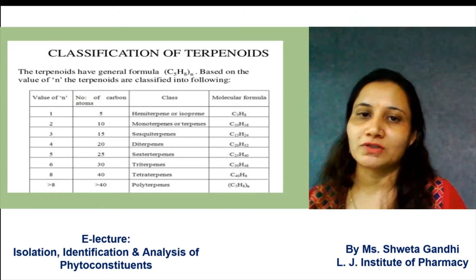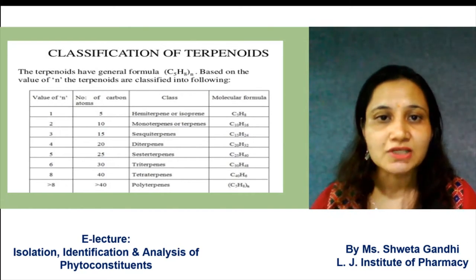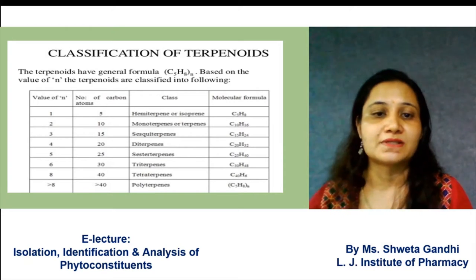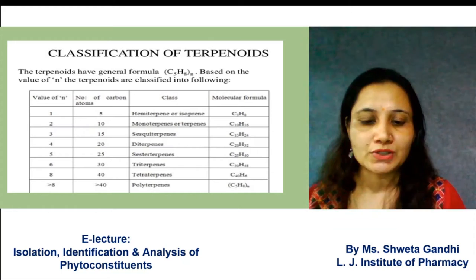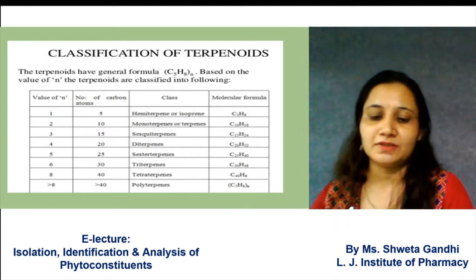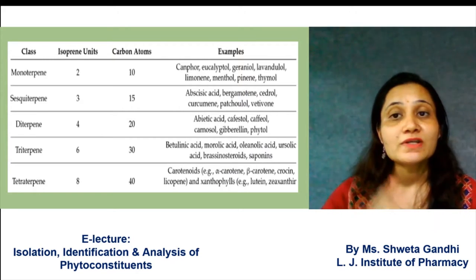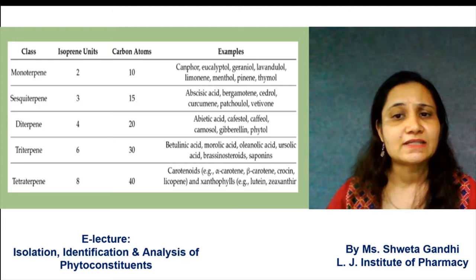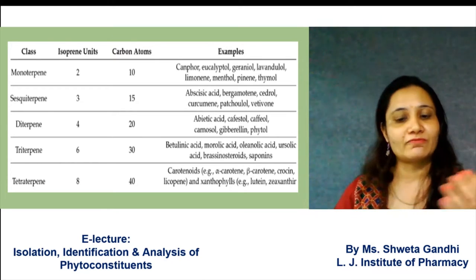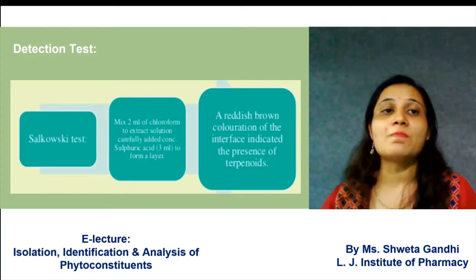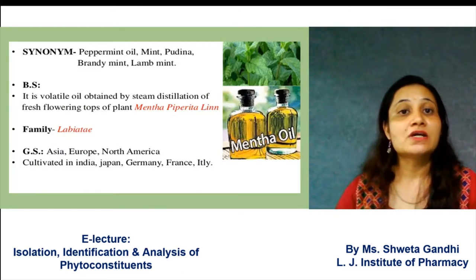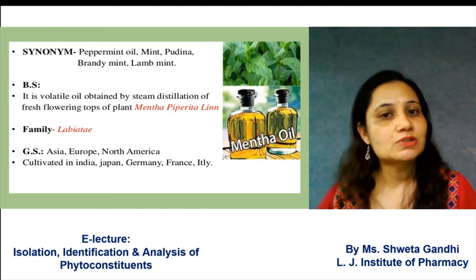The classification of terpenoids is based on increasing carbon atoms. Different types include isoprene, monoterpenes, sesquiterpenes, diterpenes, triterpenes, tetraterpenes, and polyterpenes. The value of n (1, 2, 3, 4, 5, 6) denotes the carbon atoms. For example, diterpenes include caffeol, and monoterpenes include eucalyptol and menthol. The common detection test for terpenoids is the Salkowski test, which gives a reddish-brown coloration at the interface.